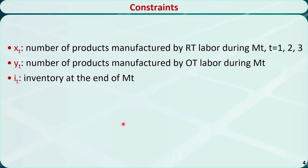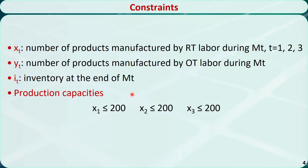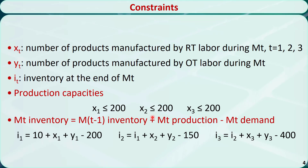For the constraints, we have two sets of relations. First, we can produce at most 200 products with regular labor per month — we can create three constraints using this relation. Second, month t's inventory is equal to month t-1's inventory plus month t's production minus month t's demand. We can create three constraints using this relation.